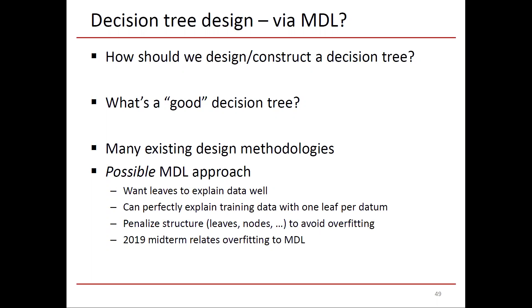And we can perfectly explain the training data with one leaf per data point. We can, meaning that's conceivable, possible. However, having a lot of structure in the decision tree, meaning lots of leaves and lots of nodes, is prone to overfitting.